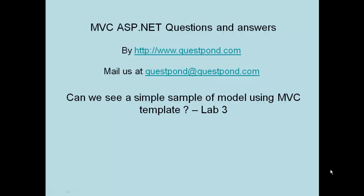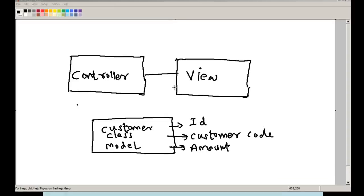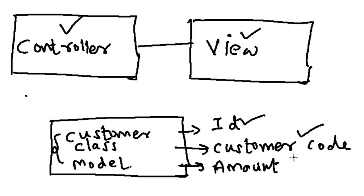In this lab we will see a simple sample of a model using the MVC template. In order to understand the model well, we will create a simple Controller, a simple View, and a class called the Customer class, which will have the CustomerID property, CustomerCode property, and Amount property.